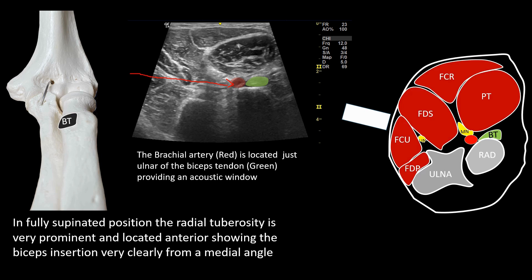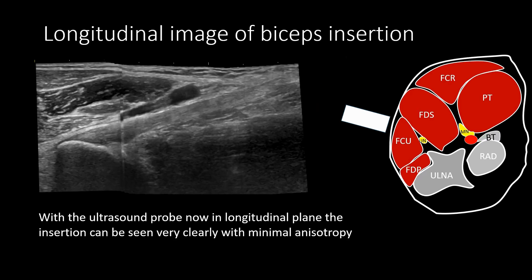This approach leads to the kind of image you can see here, where there is very little — if any — anisotropy, and the tendon fibers are very clearly visible where they insert. This is a landscape image, but nevertheless you can see very nicely the tendon insertion.